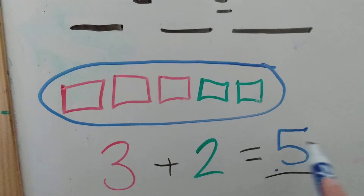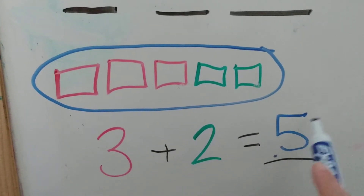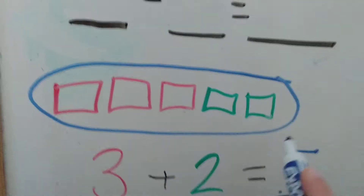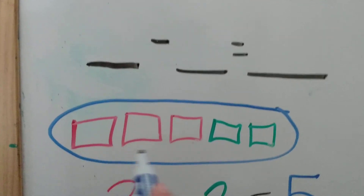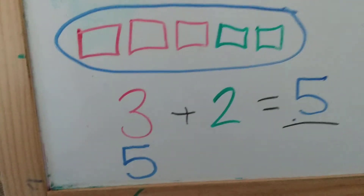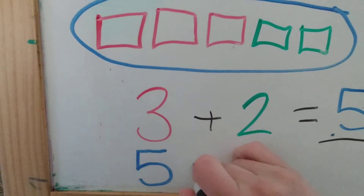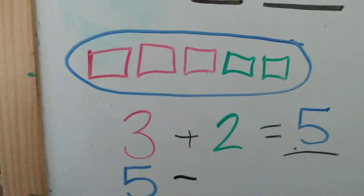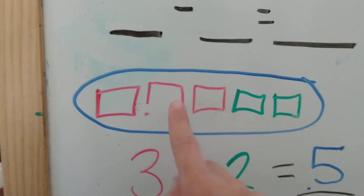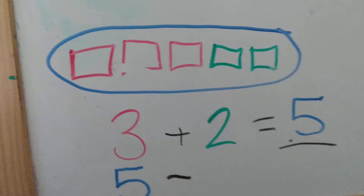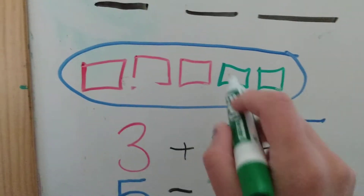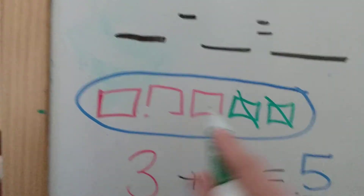Remember, when we're subtracting we always start with the biggest number. Out of our numbers — three, two, and five — five is our biggest number, so we're going to make a subtraction problem out of five. We've got five altogether, and we're going to be taking some away. You can either choose to take away the green or the red. The green is two and the red is three, so we can go ahead and take away two: five minus two.